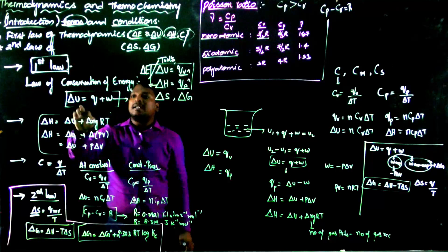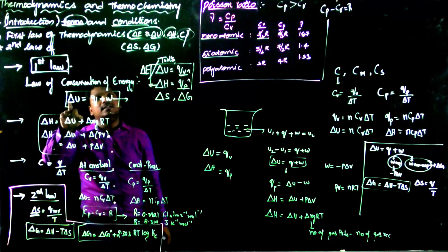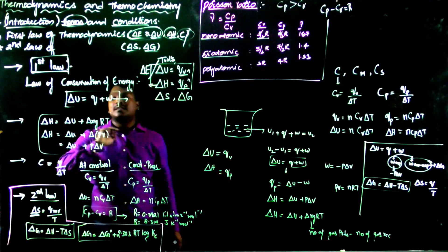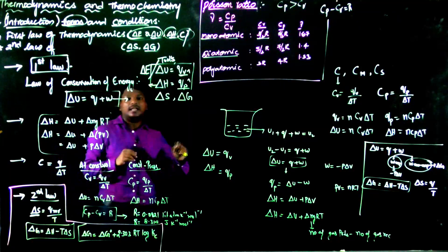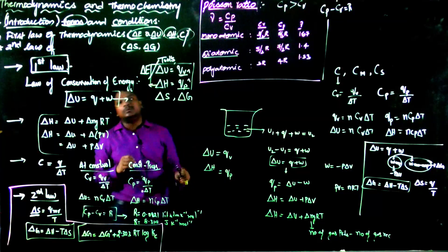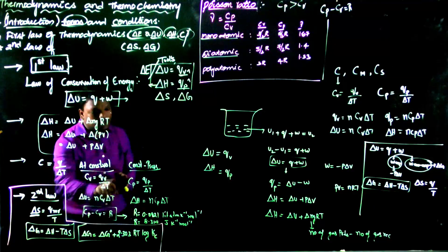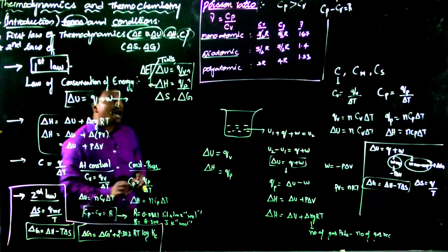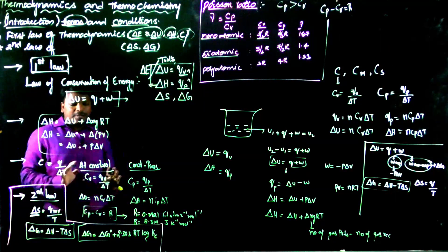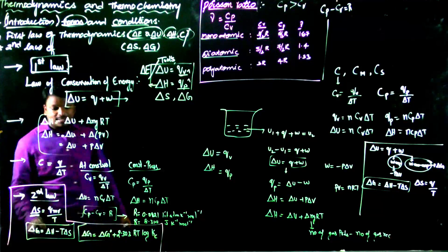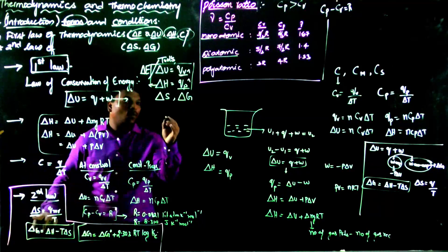To recap the First Law: ΔU = q + w at constant volume; ΔH is at constant pressure. In competitive exams, you'll be asked to calculate internal energy at constant volume or enthalpy at constant pressure — use these formulas accordingly. If heat capacity is mentioned, use the heat capacity formulas. Remember: Cp − Cv = R, along with Poisson's ratio values.